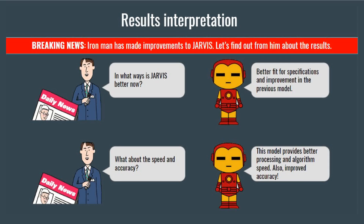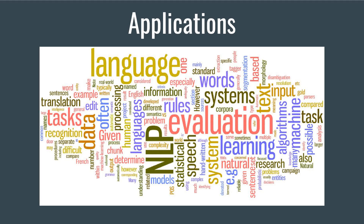The work done by the authors provides better fit for specifications, better processing, and improved algorithm speed and accuracy by utilizing the strengths of previous models and improving them. In the real world, Facebook's Knowledge Graph and systems like Google Now, Alexa, Siri, Cortana and more all rely on this technology.